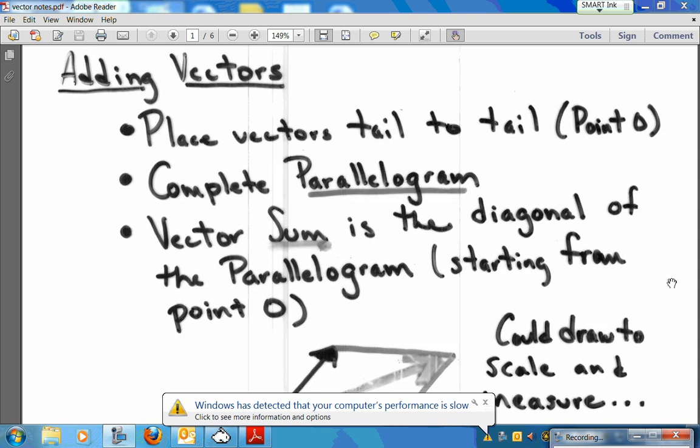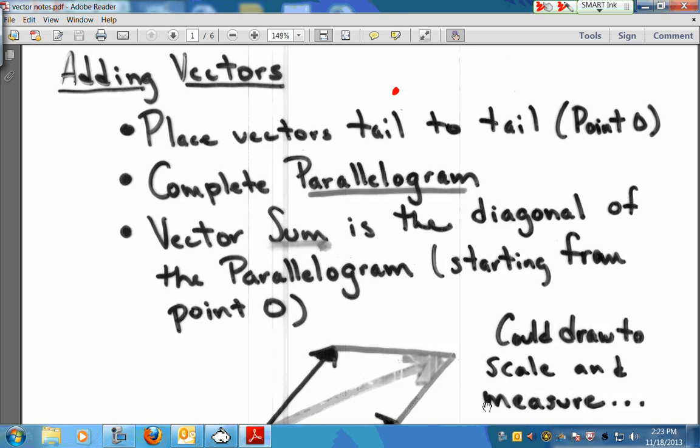So first of all, the idea of adding vectors. You're going to place your vectors tail to tail. So if we've got a couple of vectors, we're going to place them so that they are tail to tail. So here's one vector. And here's another vector. And they are not tail to tail right now. By the way, the tail of the vector is this little bottom part. And the head of the vector is the pointy part. So we're going to talk about the tail of the vector. It's the non-pointy part.